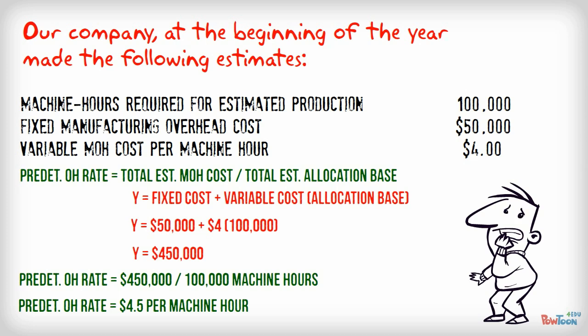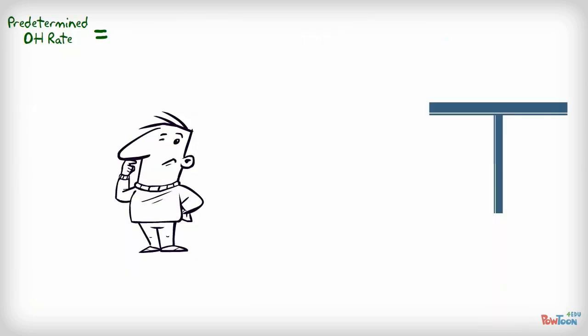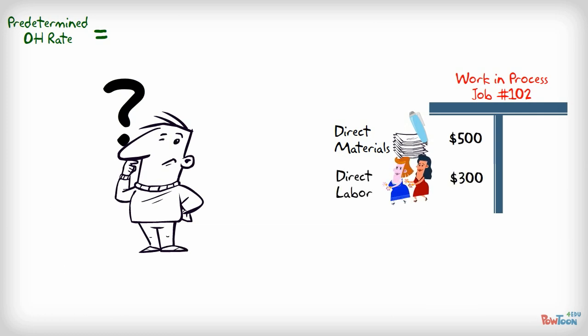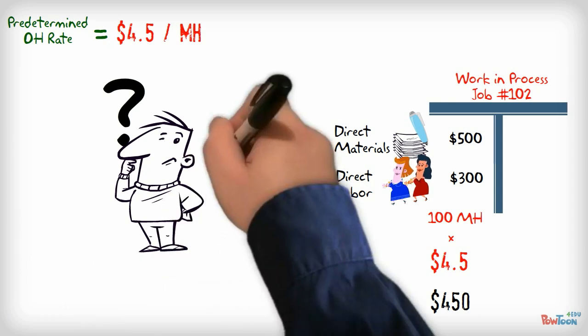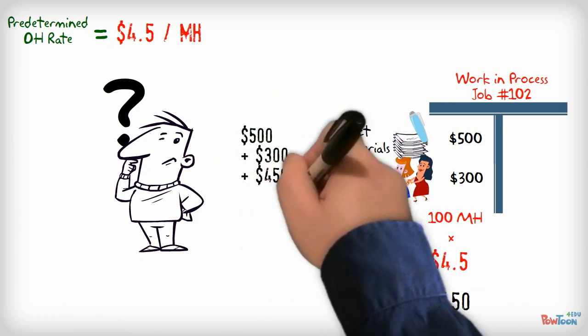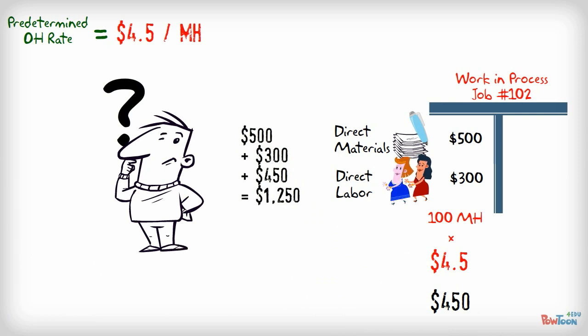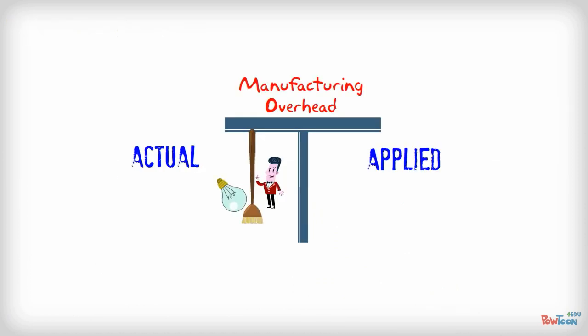Let's apply this to an example. Assume we're working on job number 102. We have incurred direct materials cost of $500 and direct labor cost of $300. We have used 100 machine hours for this product. Multiply those used machine hours with the predetermined overhead rate and get the manufacturing overhead cost applied to this particular job. Add all these three together and get the entire cost of product number 102.